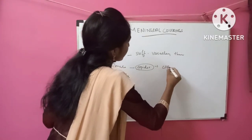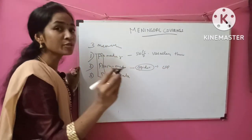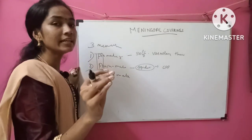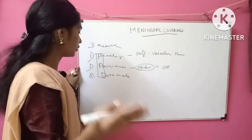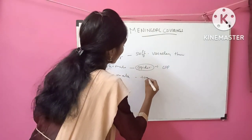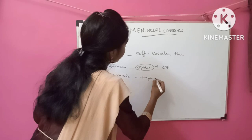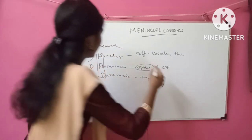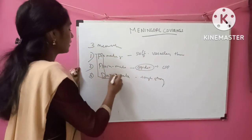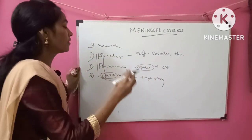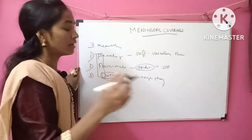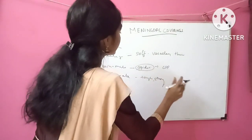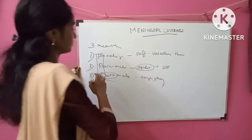The arachnoid is also involved in the drainage of CSF — cerebrospinal fluid. Lastly, dura mater — dura means tough and strong. This covering is very tough and strong, which protects the central nervous system.